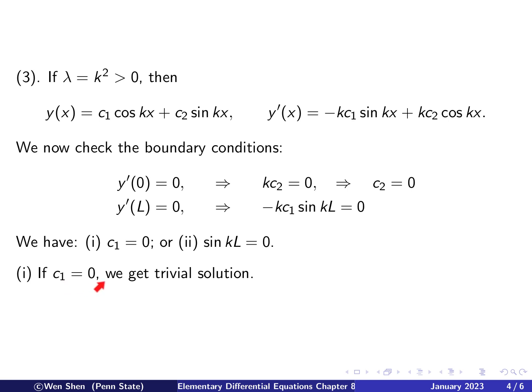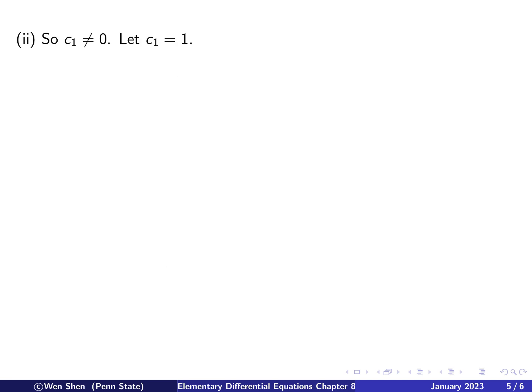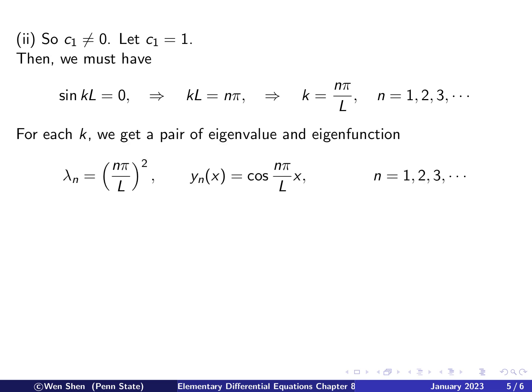And then we have only the case 2, where c1 is not 0. So we can let c1 to be 1. As we have done many times, we just put the constant to be 1. Then we must have the sine kL shall be 0. And then we see that sine is 0 when this kL here is n pi for n integer. And then this gives an expression of k, which is n pi over L, and that holds for n equals to 1, 2, 3, and so on.